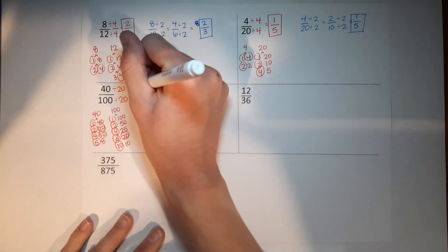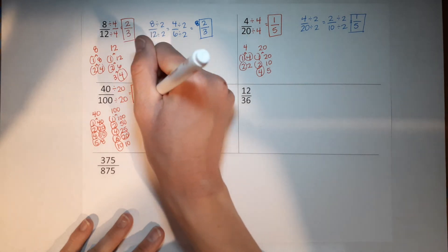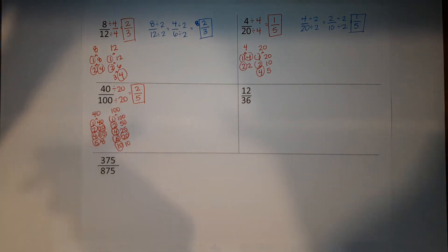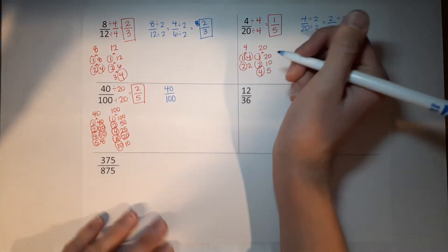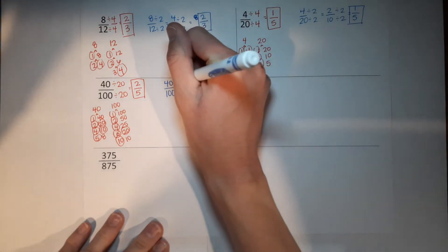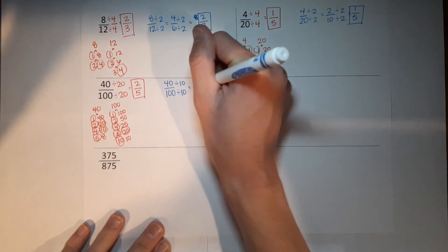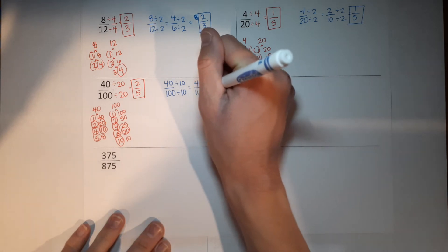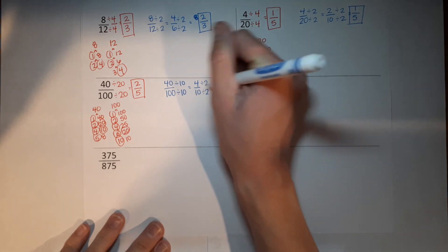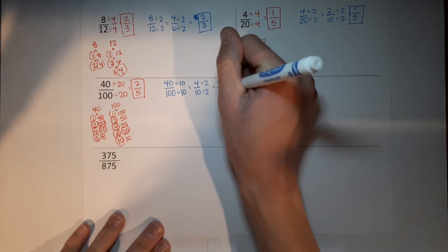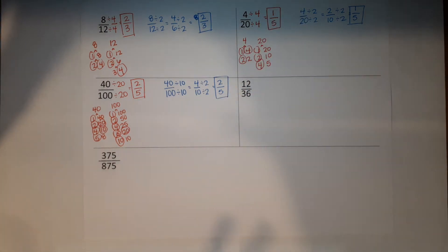Forty divided by twenty gives me two. One hundred divided by twenty gives me five. Awesome. But can I show you how I probably would have done this? I probably would have gone — oh, they are both divisible by ten. So divide the top and the bottom by ten, which gives me four tenths. And then I might notice they're both even, so divide by two. Four divided by two gives me two. Ten divided by two gives me five. And I know I'm done because there's no shared factors.